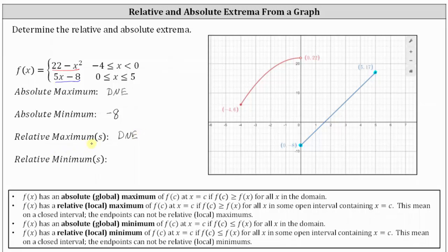The relative maximums would be high points where we can approach from both the left and the right, meaning x equals c is in some open interval. f of x has a relative or local minimum of f of c at x equals c if f of c is less than or equal to f of x for all x in some open interval containing x equals c. We do have a low point at 0 comma negative 8. We can approach x equals 0 from the left along the red parabola and from the right along the blue line. So there is an open interval containing x equals 0 where negative 8 is less than or equal to the function values in the interval, and therefore negative 8 is a relative minimum.